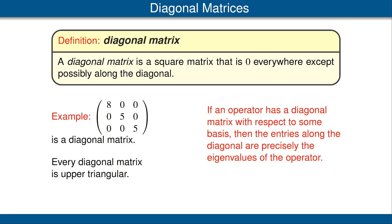We know that if an operator has an upper triangular matrix with respect to some basis, then the eigenvalues of that matrix are precisely the diagonal entries of that matrix. Hence, the same thing is true for diagonal matrices. For example, if an operator has the matrix shown in the left column, then the eigenvalues of that operator are precisely 8 and 5.